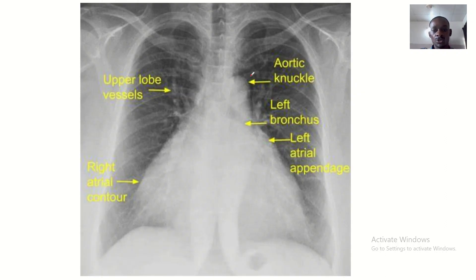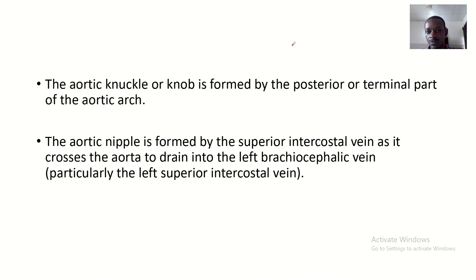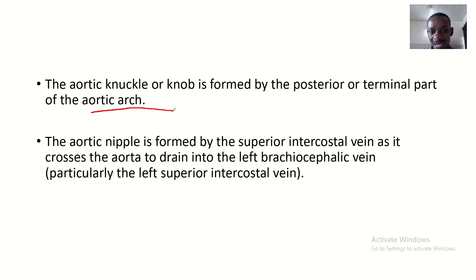Here is an X-ray, and what we are focusing on is the aortic knuckle. The aortic knuckle or knob is formed by the posterior or terminal part of the aortic arch.